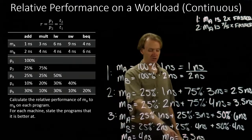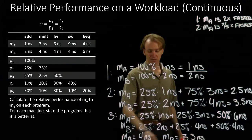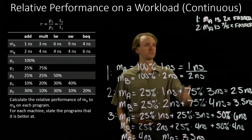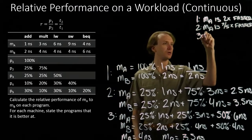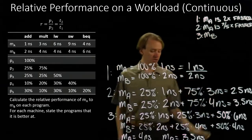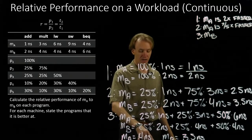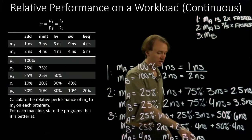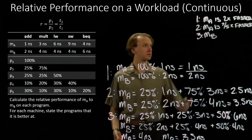So this time machine B takes less time than machine A, so machine B is faster. How much faster? Eight nanoseconds divided by seven nanoseconds, so eight-sevenths times faster.